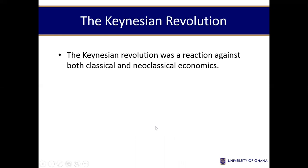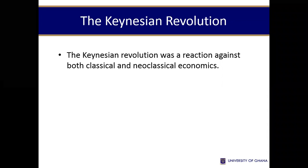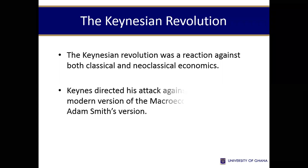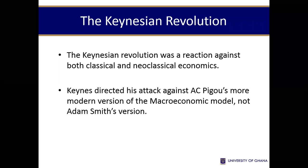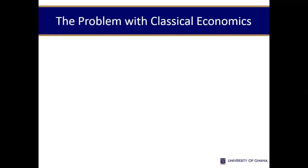Basically, what Keynes did was try to counter the beliefs of the old economists. He was trying to counter all the theories by Adam Smith, Cecil Pigou, and all those people — whatever beliefs that they had. He had other beliefs, and he was just trying to bring out a new form of macroeconomics which was entirely in contradiction with the views of those old economists.